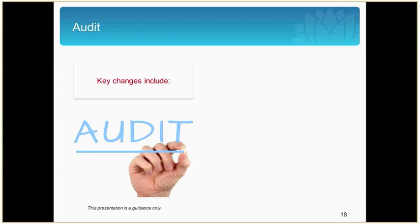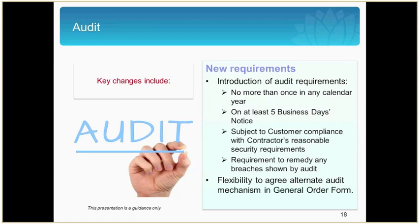In regards to audit, there are now new requirements to ensure better oversight of contract compliance. The customer may now conduct an audit to confirm the contractor's compliance no more than once in any calendar year, and must give the contractor at least five business days prior written notice. There is a clear requirement to remedy any breach or breaches shown by the audit. There is also flexibility to agree on alternative audit mechanisms in the general order form. These changes give customers greater scrutiny of compliance by contractors in line with procurement policy requirements.